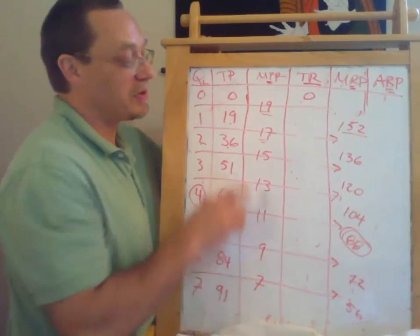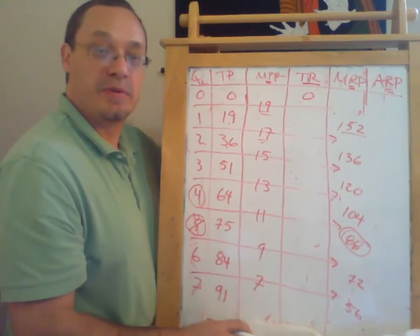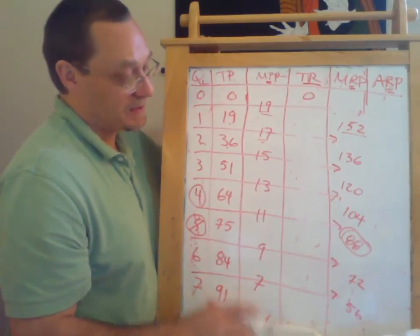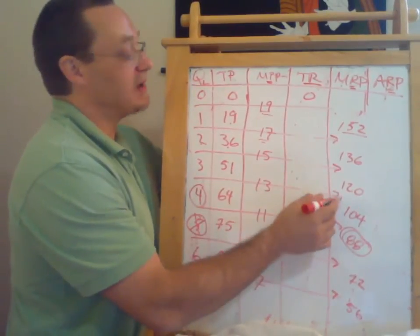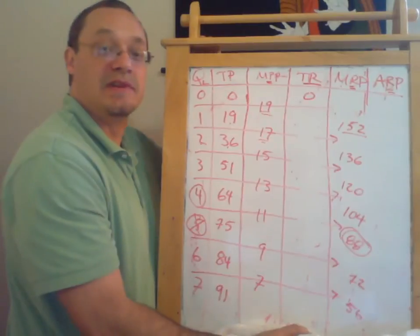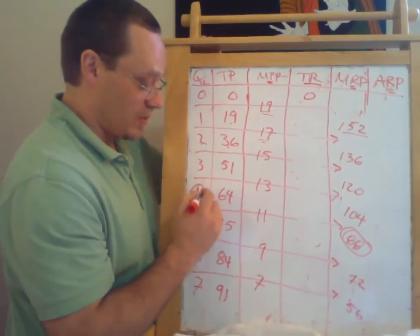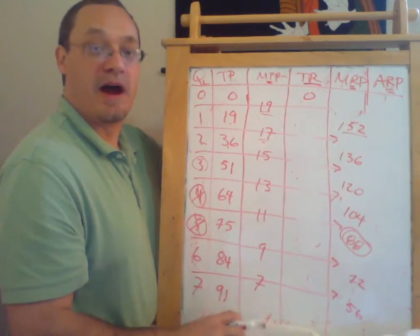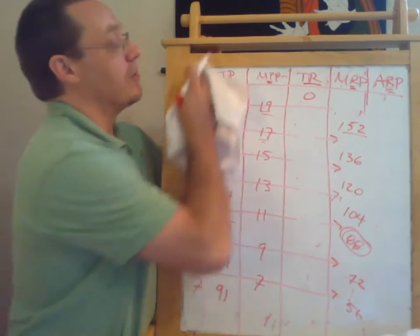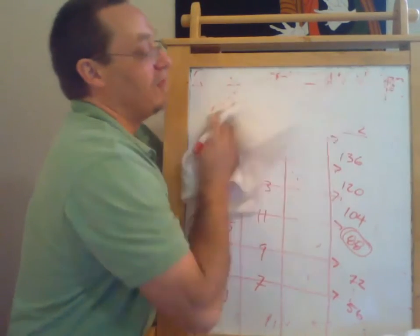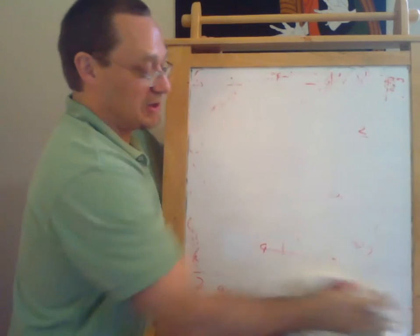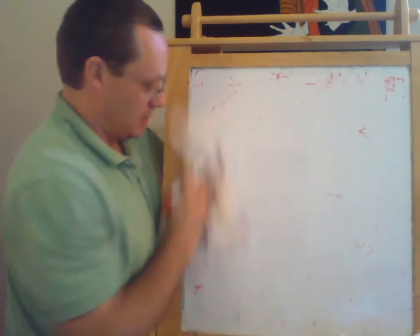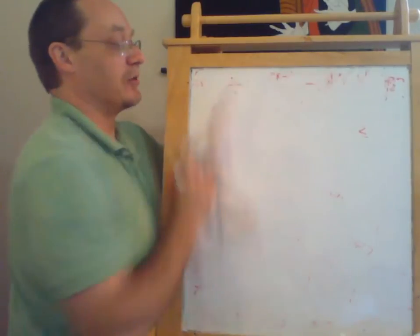We would also get a change in the number of workers we want to hire if the level of wages changes. If wages rise — say, to $115 — then worker number four is no longer profitable and we only want to hire three workers. Let me go ahead and review some of the formulas that I've stated in words but haven't yet written out in algebra.